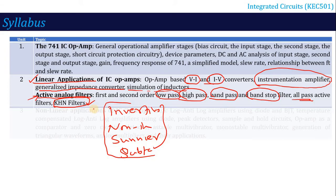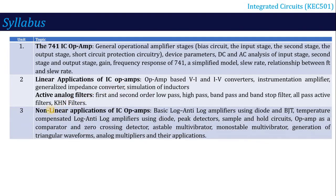Unit 3 covers non-linear applications of op-amps. Here you will learn to make log amplifiers and anti-log amplifiers using op-amp ICs, for which you need to use a diode or BJT along with the op-amp.